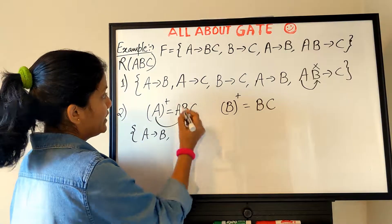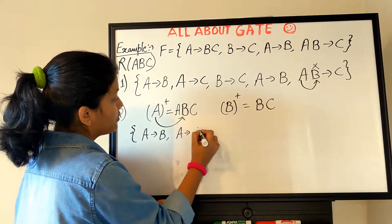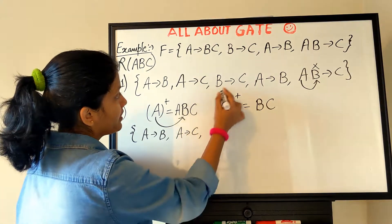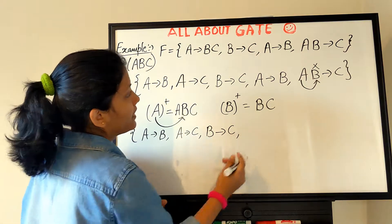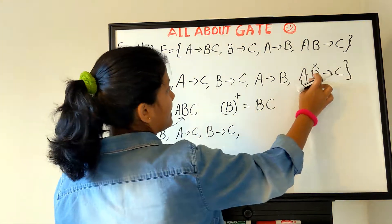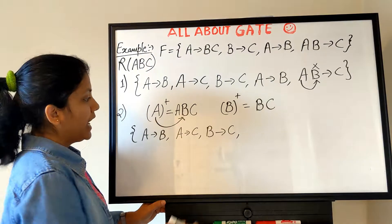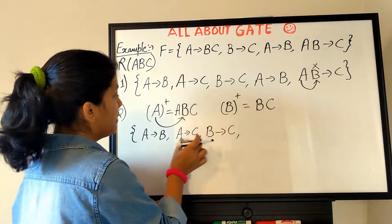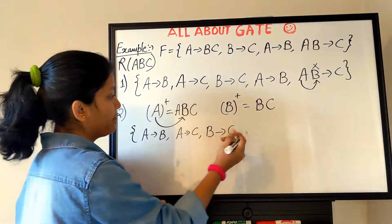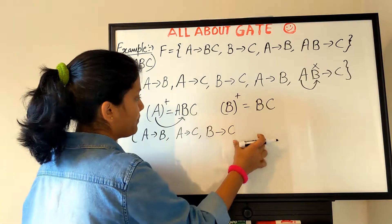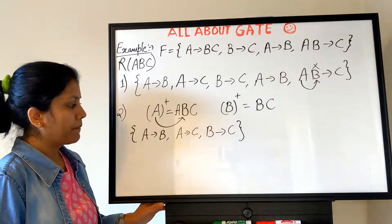After step 2, the set becomes: A→B, A→C, B→C. The last dependency A→C is not rewritten again since it is already present, so our set after step 2 is A→B, A→C, and B→C.